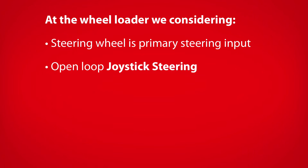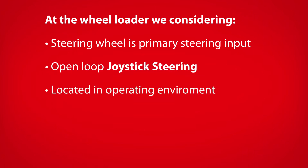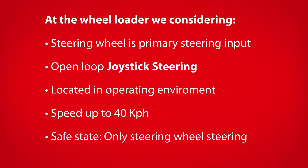The driver is using open loop joystick steering. The machine operates outside public roads and travels at speeds up to 40 kilometers per hour. Safe state is defined as all electro-hydraulic flow being stopped and steering can only occur by using the steering wheel.